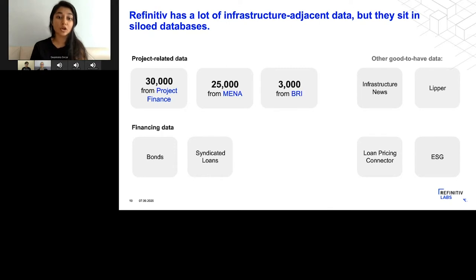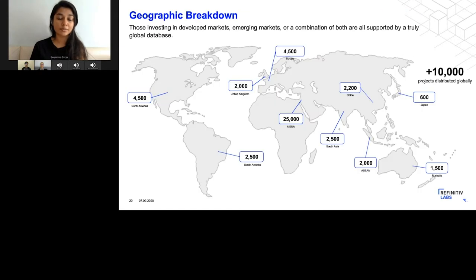When we put all of our project data together from our global project finance database, from the Middle East and North African regions, as well as the projects in the Belt and Road Initiative, we realized that we truly had a global infrastructure database with over 60,000 infrastructure projects, which is much better than what exists on the market today.